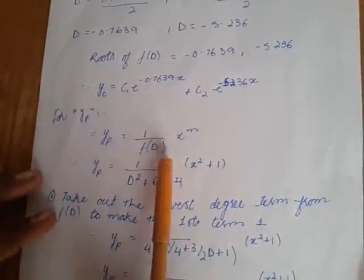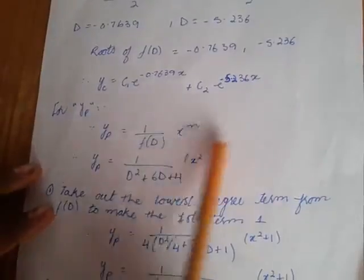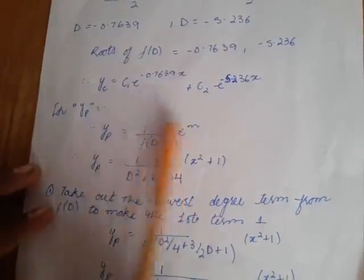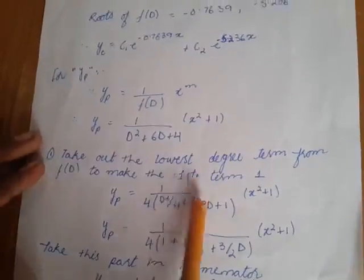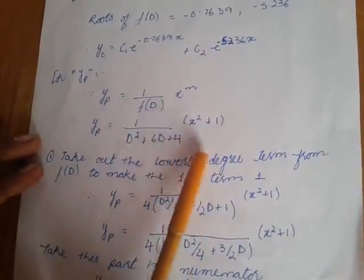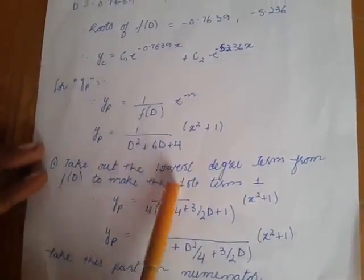Now, for yp. yp equals 1 over f(D) times xm. We know that f(D) is this part and xm is this part. Now, take the lowest degree term common.